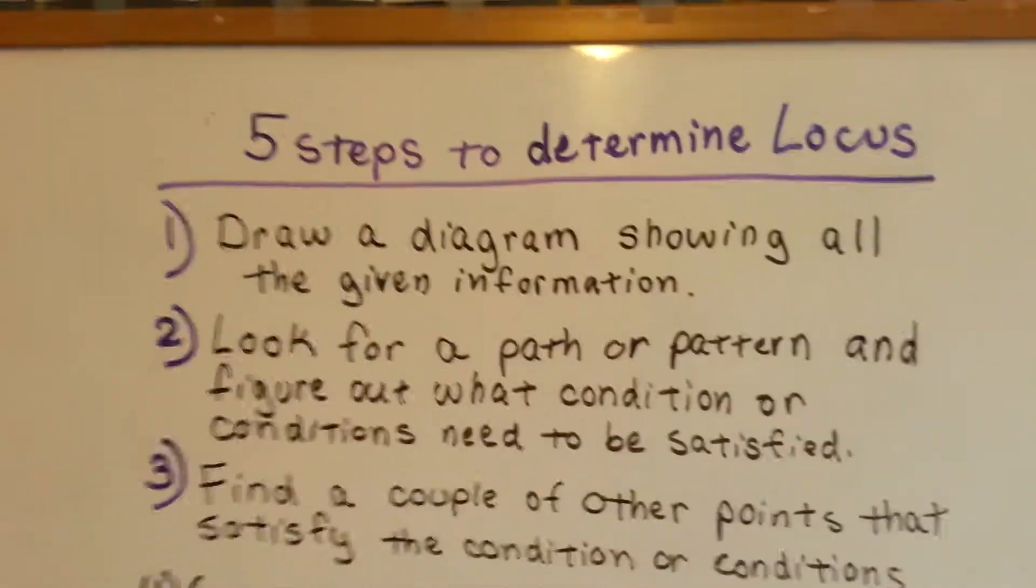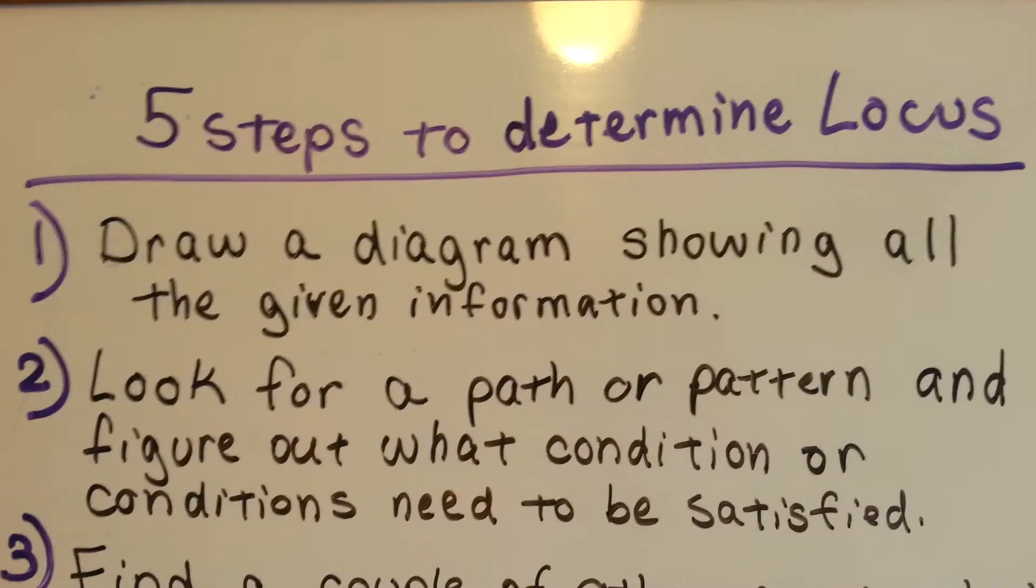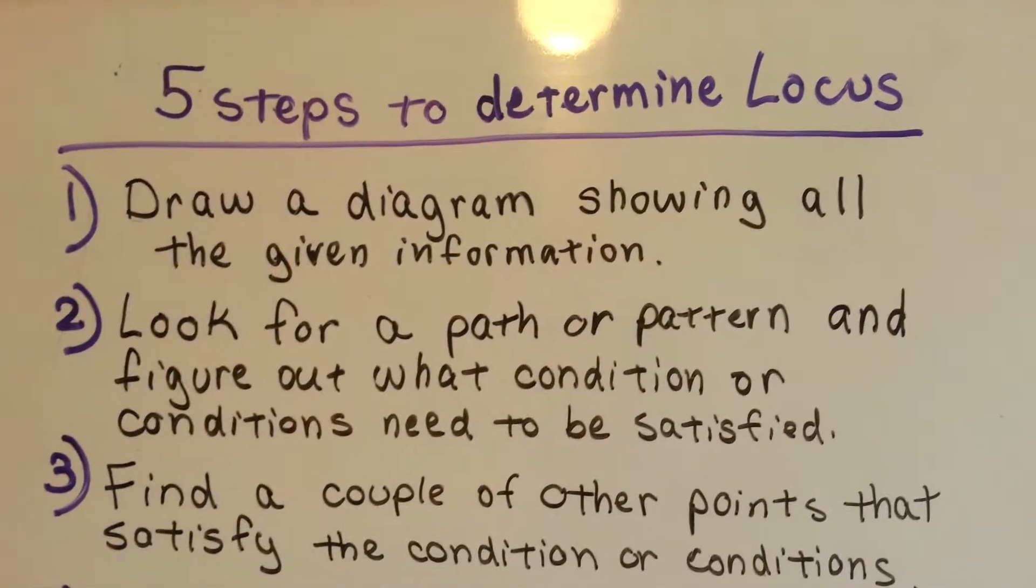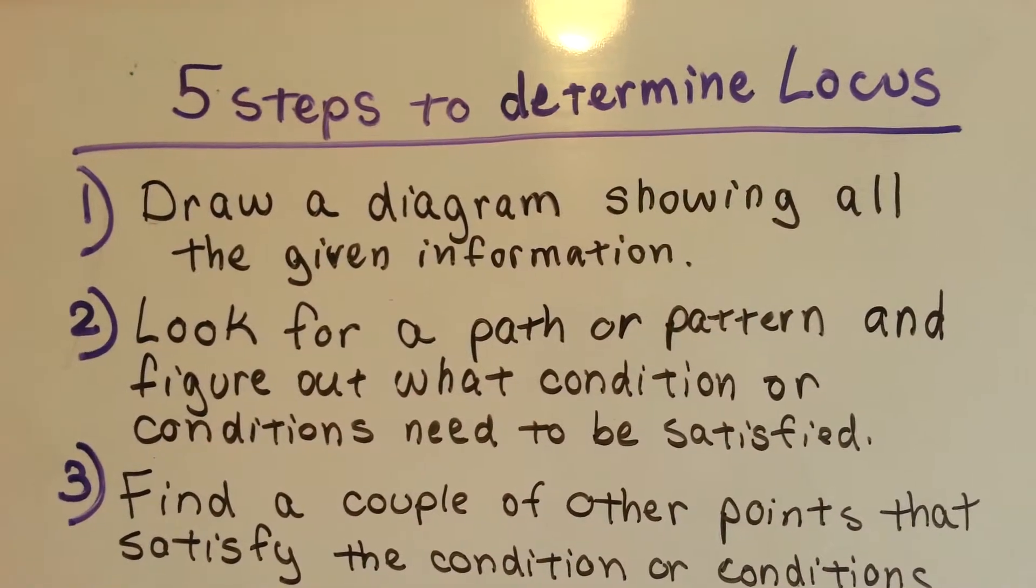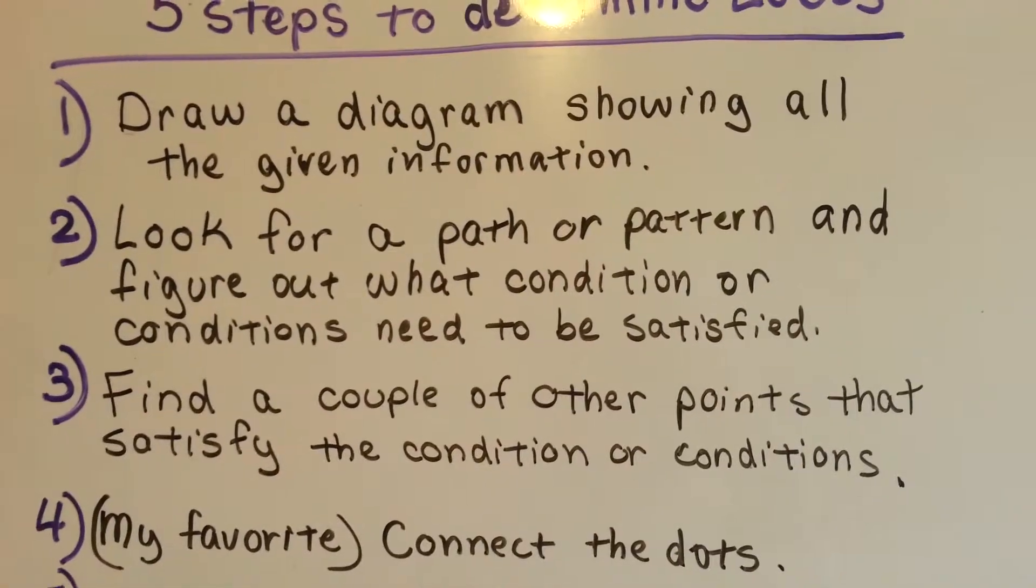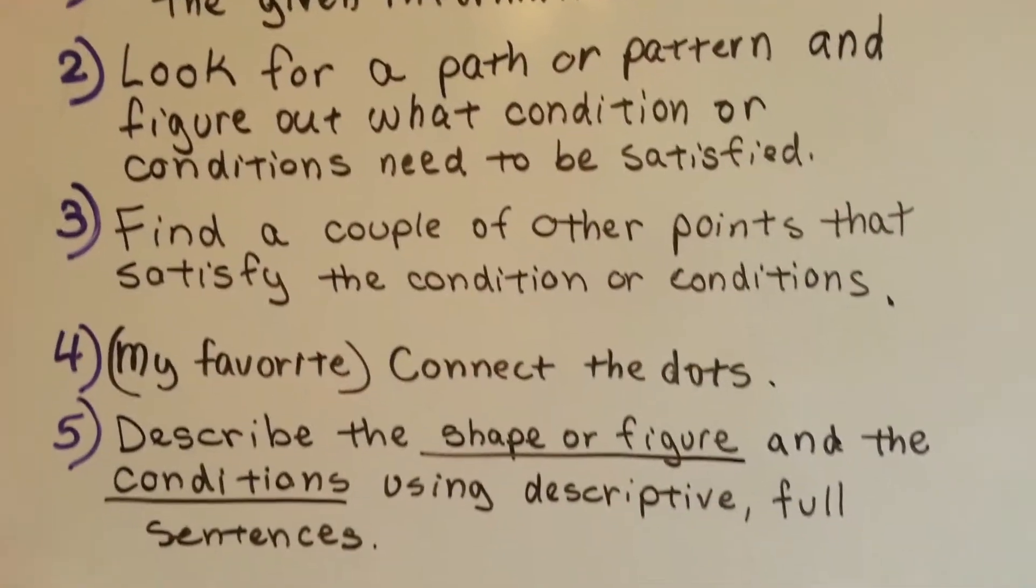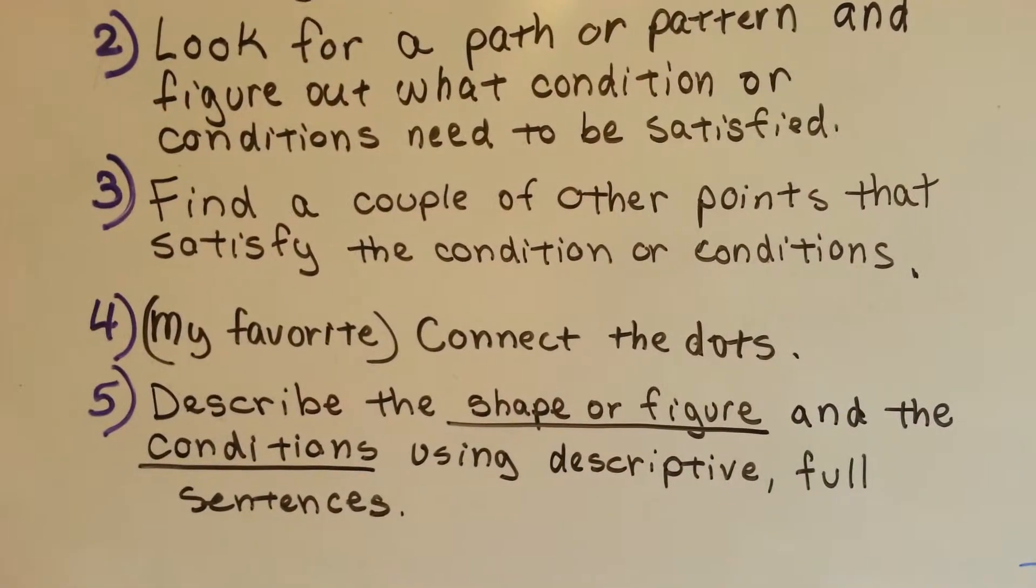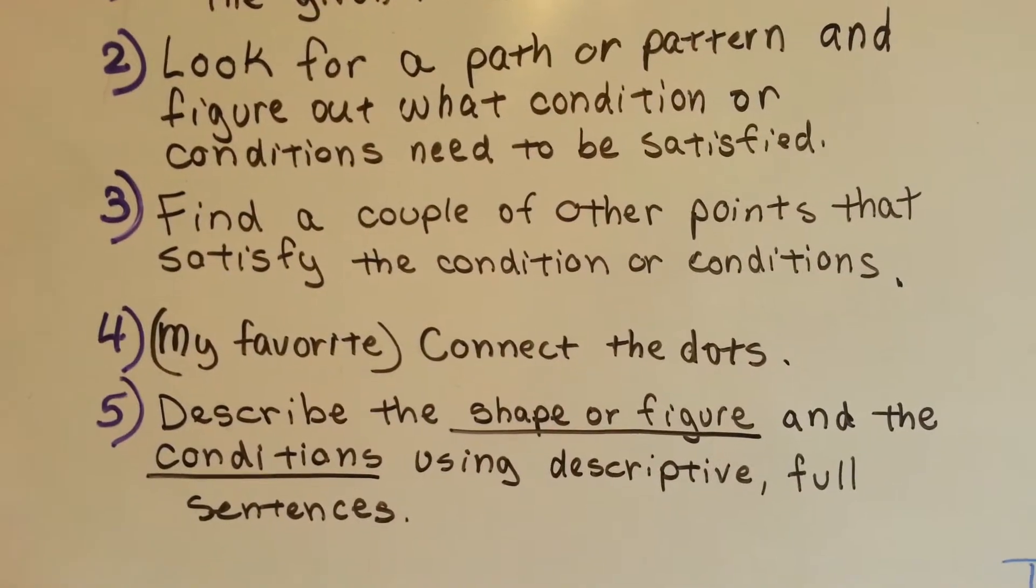Here's our five steps to determine the locus. The first thing you do is draw a diagram showing all the given information. You look for a path or pattern and figure out what condition or conditions need to be satisfied. You find a couple of other points that satisfy the condition or conditions, and then my favorite part, you connect the dots. And then lastly, you describe the shape or figure and the conditions using descriptive full sentences.